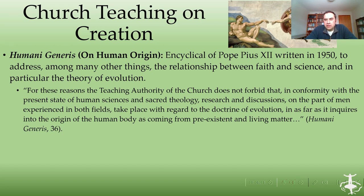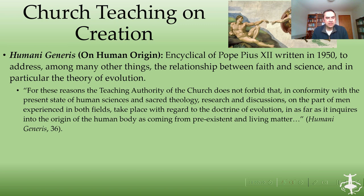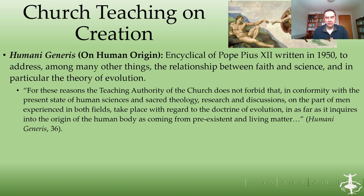One of the church documents pertinent to this discussion is Humanae Generis on human origins, written by Pope Pius XII in 1950 to address, among other things, the relationship between faith and science and in particular the theory of evolution. Around this time, the theory of evolution was gaining more and more traction, having its origins in Charles Darwin's Origin of Species. Because science was developing at a rapid pace, Pope Pius XII said we need to address how we should think about and deal with the doctrine of evolution.